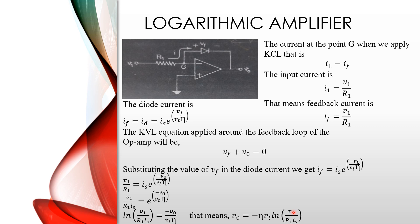Why do we get a minus sign here? Because the supply voltage is applied at the inverting terminal, so we get minus here. η is the value dependent on whether the diode is a silicon diode or a germanium diode — it depends on the material property. Vt is the thermal voltage. In ln(V1 / R1·Is), Is is the reverse saturation current and R1 is the input resistor.